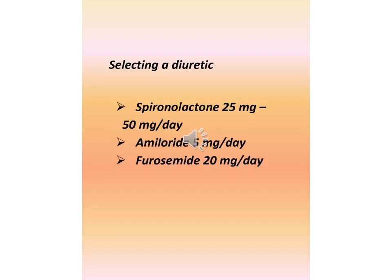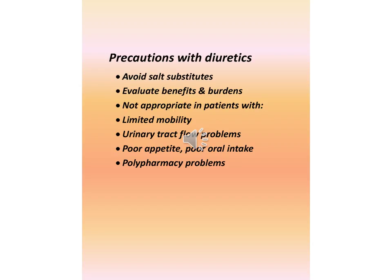Selecting a diuretic: spironolactone 25–50 mg per day, amiloride 5 mg per day, furosemide 20 mg per day. Precautions with diuretics: avoid salt substitutes, evaluate benefits and burdens. Not appropriate in patients with limited mobility, urinary tract flow problems, poor appetite, poor oral intake, or polypharmacy problems.